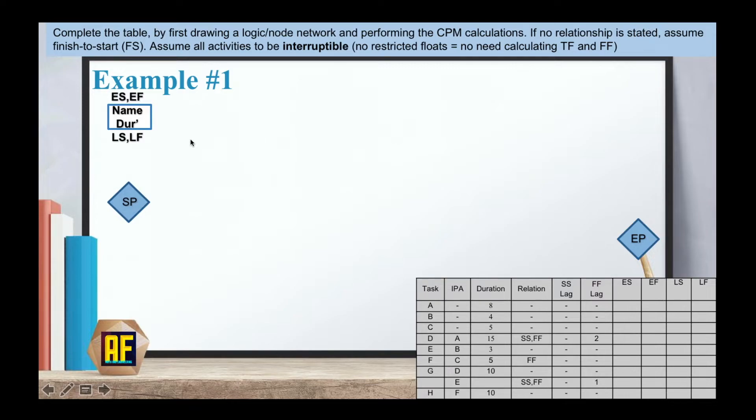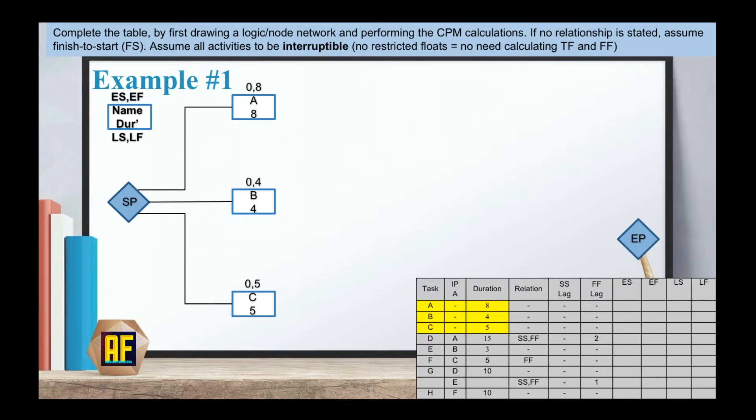If you remember our box from the previous video, this time we will be working with a smaller box because we don't need the total floats. We have our early start, early finish, late start, late finish, name of an activity and the duration. We need to do a starting point and an ending point which all activities should finish at or start from. Activities A, B and C have durations of 8, 4 and 5. These are our first activities so they all connect to our starting point. Zero plus 8 equals 8, zero plus 4 equals 4, and zero plus 5 equals 5.